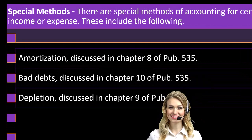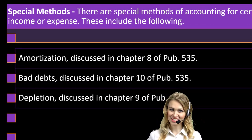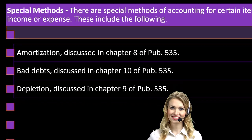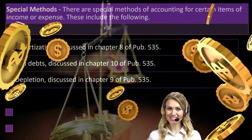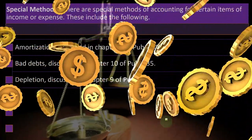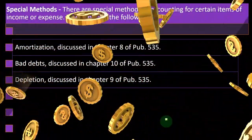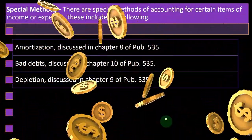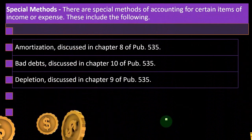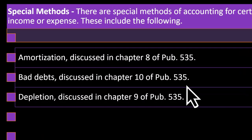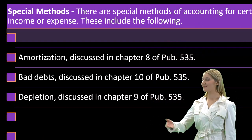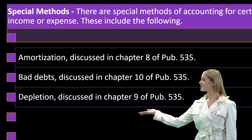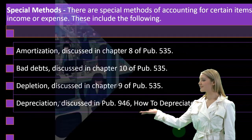Depletion is kind of similar to depreciation, except you have a natural resource that you're actually consuming. So if you had an oil well in the ground, you might have to try to value the amount you're going to get out of it. And then as you start to use up the resource and pull it out, you're depleting it, and you'd have to record the depletion.